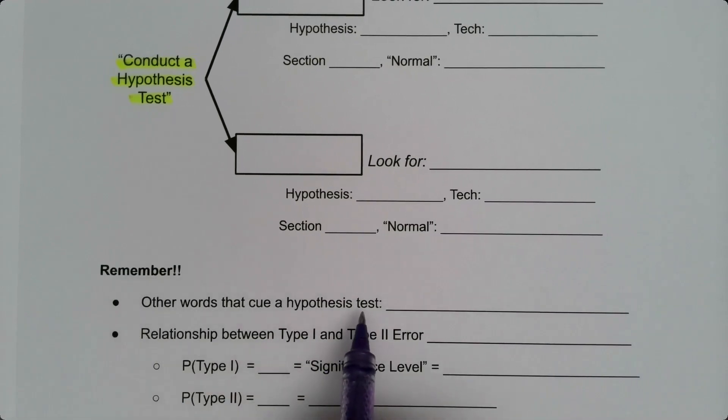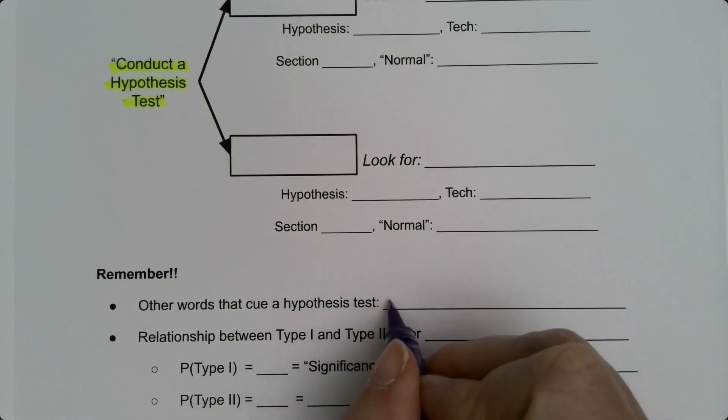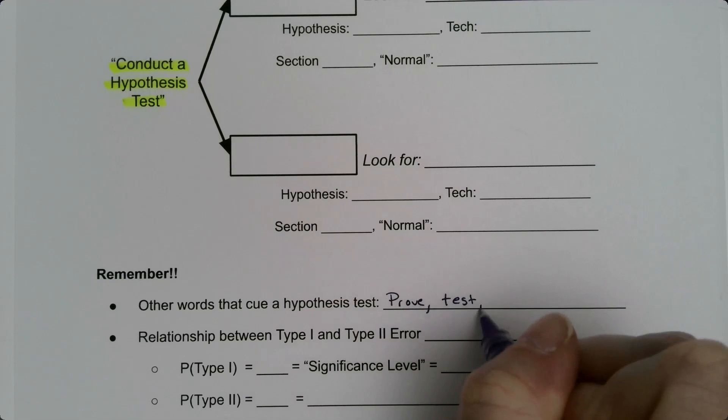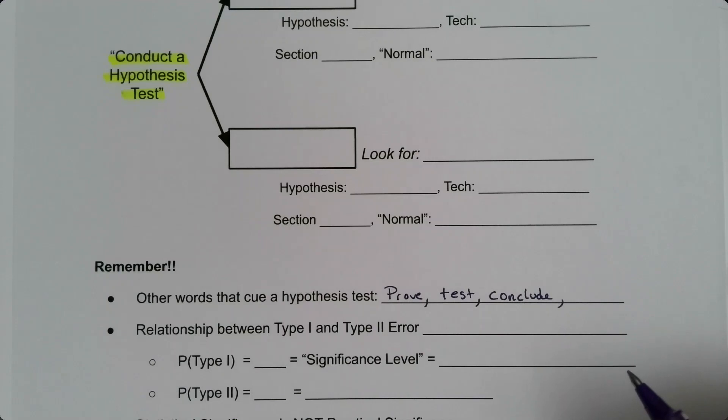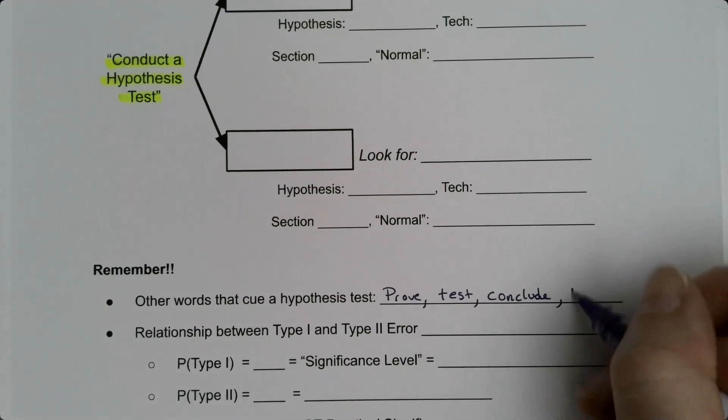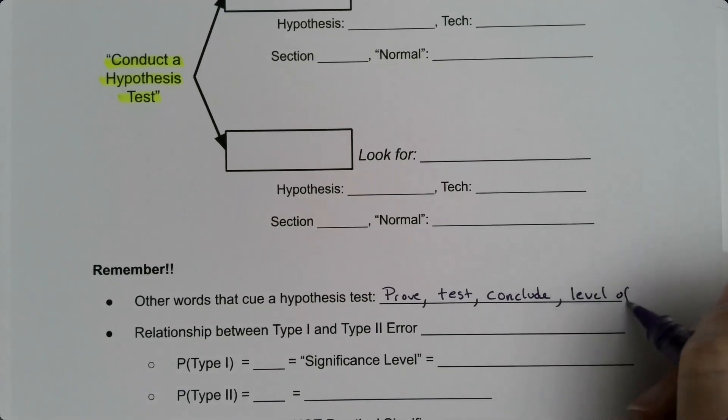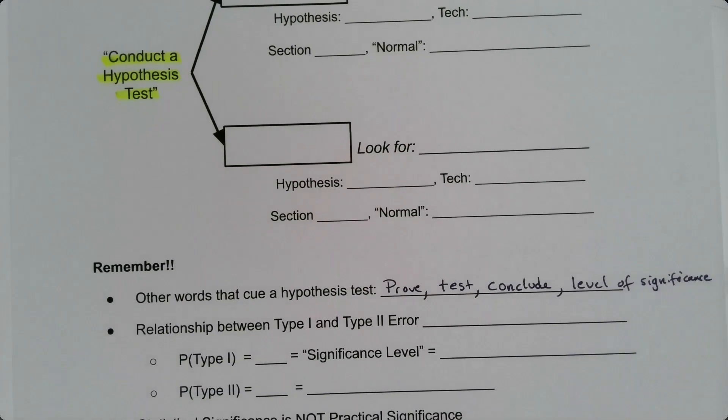Some other words that can cue a hypothesis test would be 'proof,' obviously just the word 'test,' 'can you conclude that,' and 'a level of significance.' If you see a level of significance in the problem, that's a big sign it's a hypothesis test.